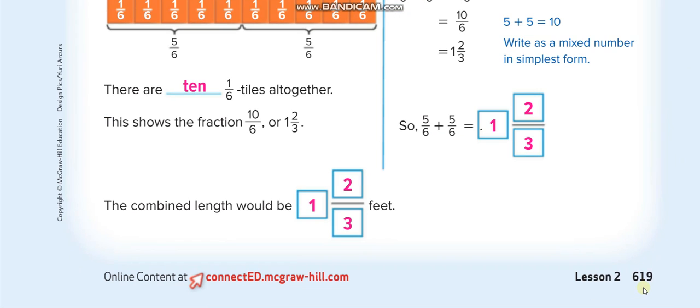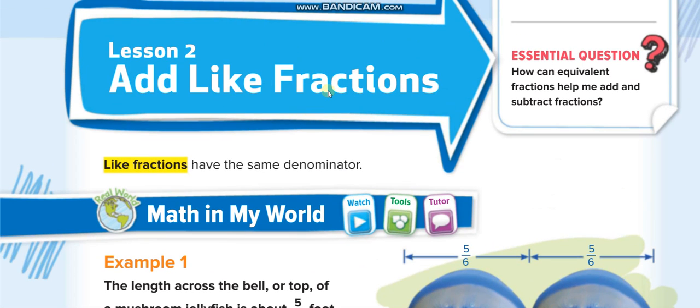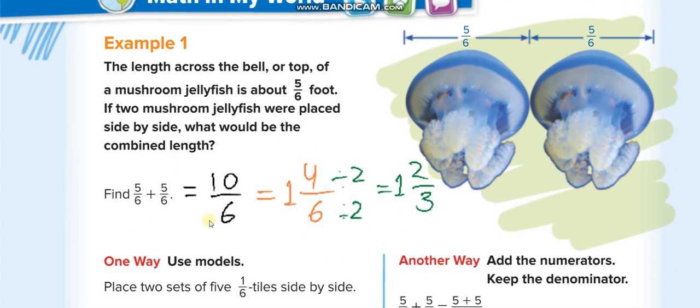In this lesson, we are going to add like fractions. Like fractions have the same denominators. Any fractions that have the same denominators, like 5 over 6 plus 5 over 6, here even the numerators are the same, but that doesn't matter for like fractions.